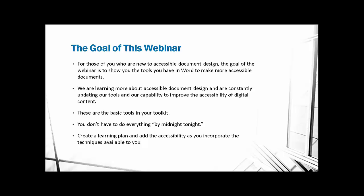I will never guarantee or say that a document is completely accessible. There are too many different types of adaptive technologies, and we are learning more about how to create accessible documents. Even within the last few months, Microsoft has added techniques and tools to Word that allow us to have column and row titles on tables, which we didn't have six months ago. The field of accessible document design is changing as we understand how those of us with disabilities are accessing digital content. That's why I will never say a document is completely accessible — they're always optimally accessible or more accessible.